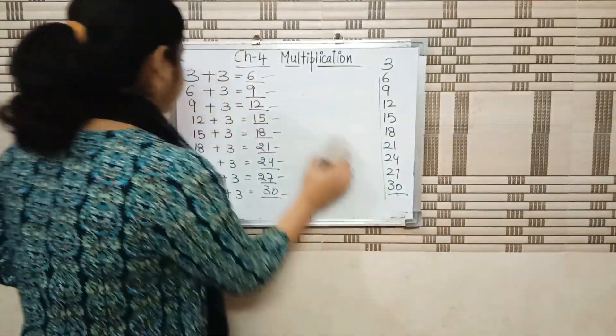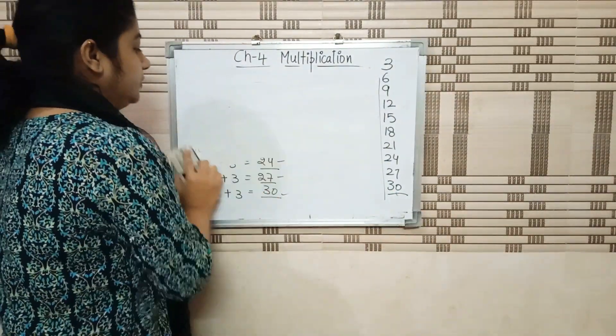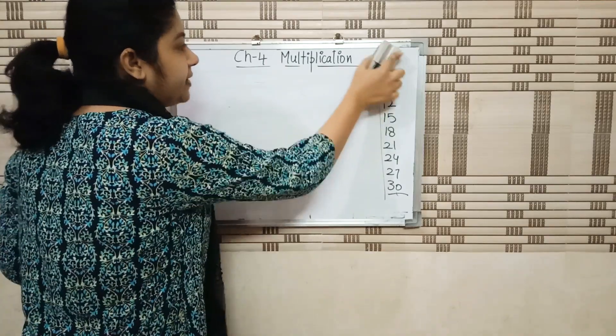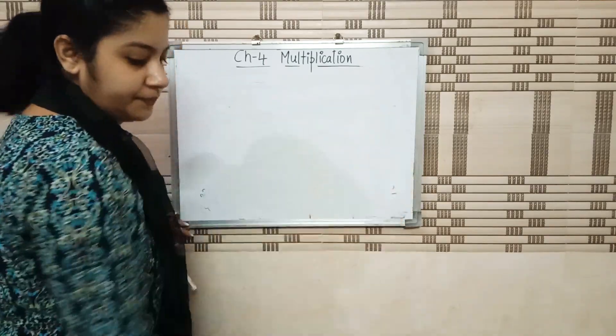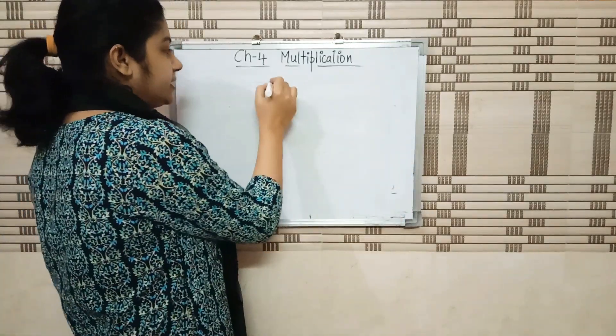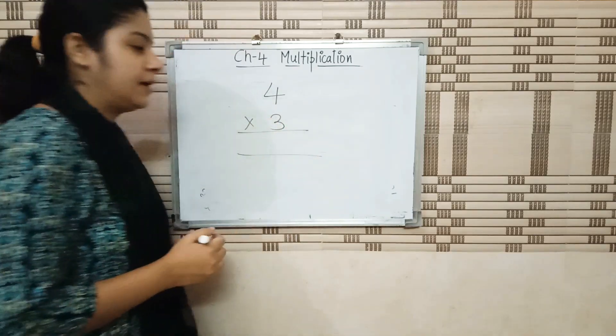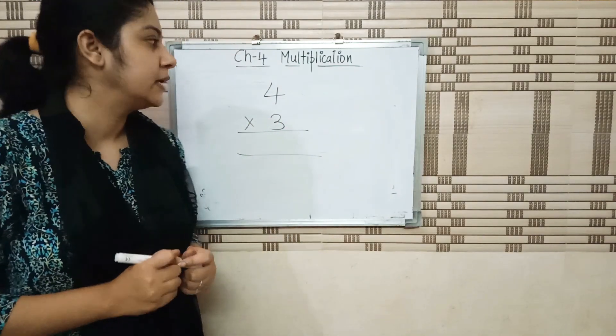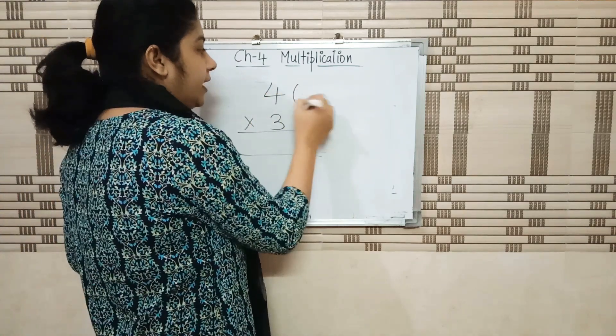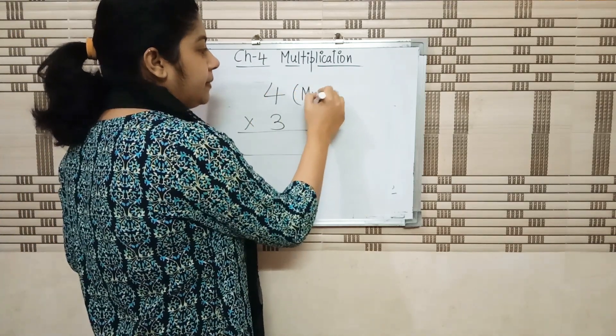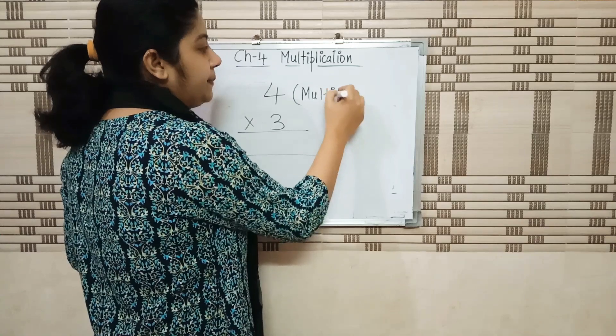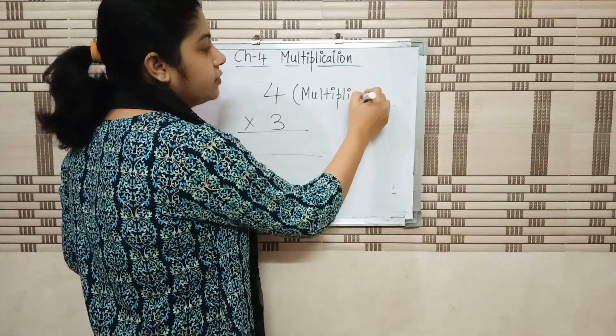Now, the second thing. We can say that multiplication is a repeated addition. Like for example, 4 multiply by 3. We call it multiplicand. What do we call it?